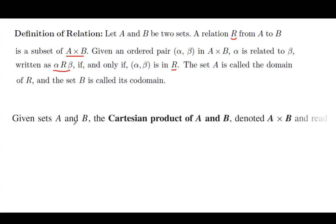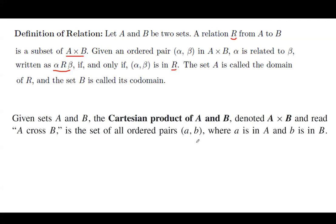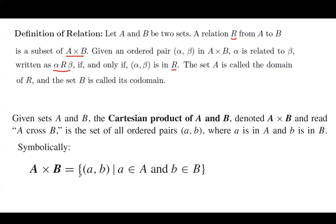If you have two sets A and B, the Cartesian product of A and B, denoted by A cross B, is the set of all ordered pairs (a, b) where a is in the first set and b is in the second set. Symbolically, the Cartesian product between A and B is the set using curly brackets of all ordered pairs, such that the first element belongs to the first set and the second element belongs to the second set.